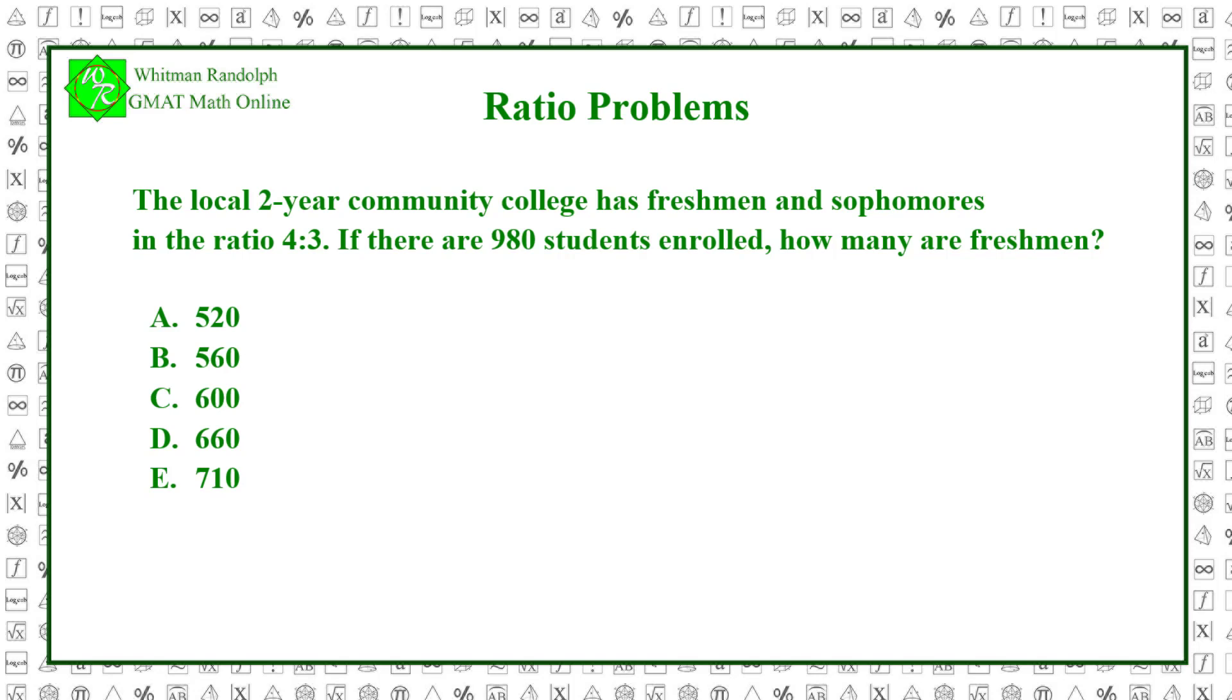Therefore, to find the number of freshmen, we multiply the total enrollment, 980, by 4 sevenths. 4 sevenths times 980 equals 560. So the correct answer is B.